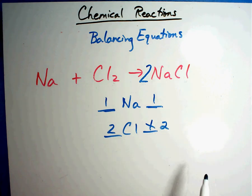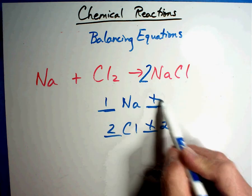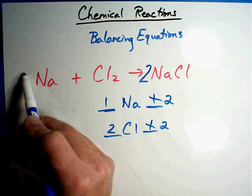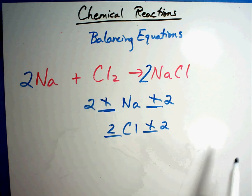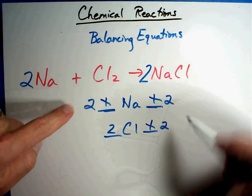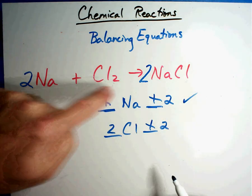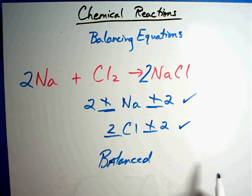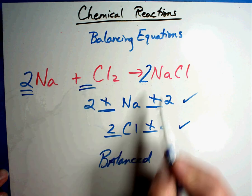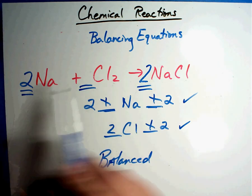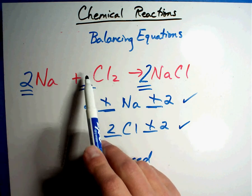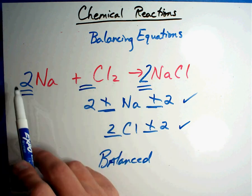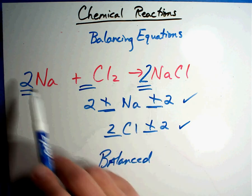But by putting a two there, I just messed somebody up — by putting a two in front of NaCl, I now made that a two. That's not a major problem; I can fix that by putting a two in front of Na on the left side. Now I have two NAs here and two NAs here — that's balanced. Two CLs here and two CLs here — balanced. The recipe is: two of Na with one of Cl₂ to make two of NaCl. We don't write ones — a blank space means it's a one.